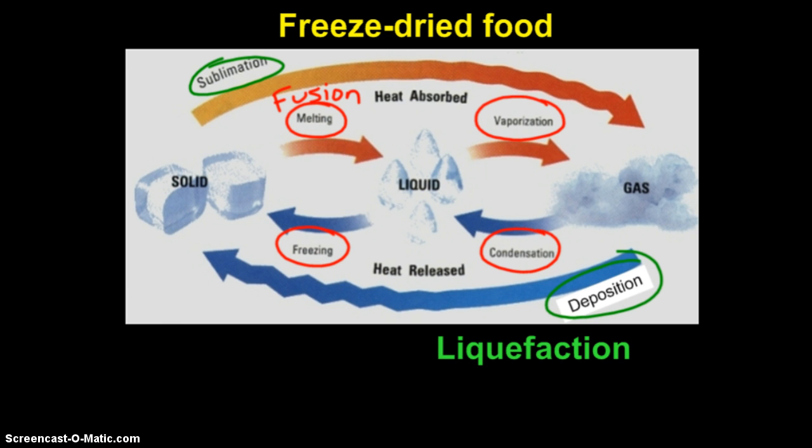That sums up all of our different phase changes. If we are going to the right, absorbing heat, that would be an endothermic phase change. And if we are going to the left, releasing heat, that would be exothermic phase changes.